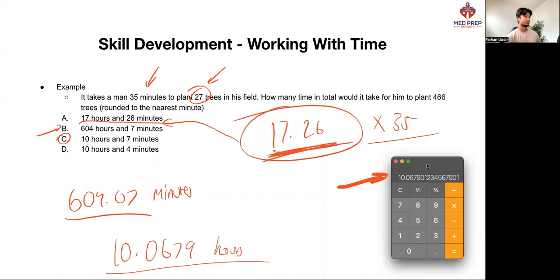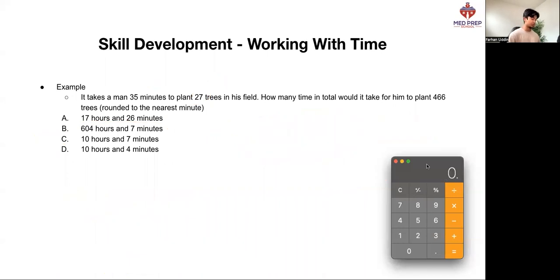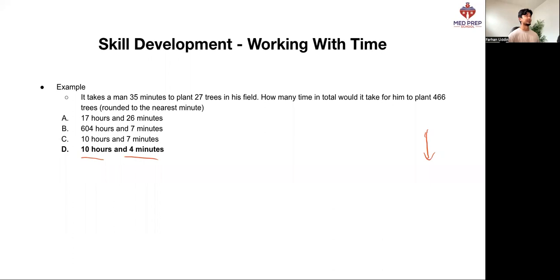The mistake would be to pick option C and move on, because now hopefully we can see that this is 10 hours and 0.0679 of an hour, not seven minutes. In order to find out what that actually is, what we can do is go 0.0679 times 60, giving us 4, which means that that is actually equivalent to 10 hours and 4 minutes. Hence, D is our answer here.